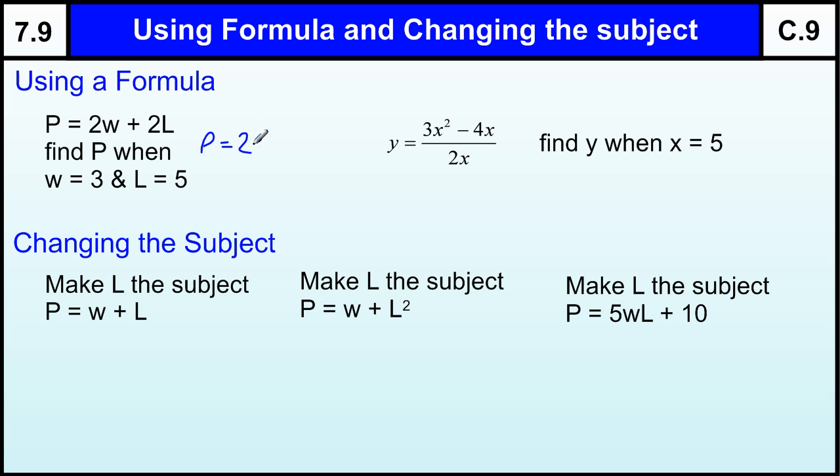So 2w is 2 times w and w is 3. So 2 times 3 plus 2L. L is 5 so we've got 2 times 5. So P equals 6 plus 10.